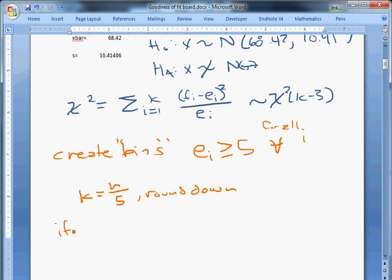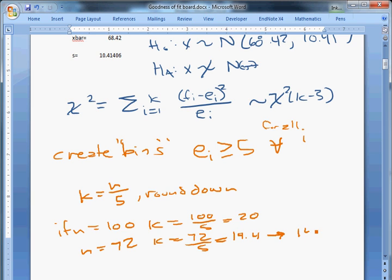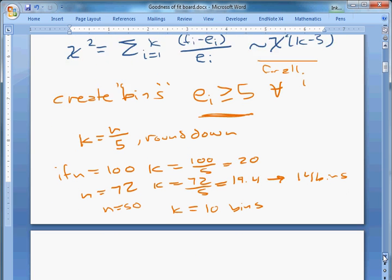So with a sample size, if N equaled 100, then K would equal 100 divided by 5 equals 20. If N equaled 72, then K would equal 72 divided by 5 equals 14.4, so we'd have 14 bins. As it stands, we have N equals 50, so we're going to have 10 bins. That's how it's going to work. The reason is that if we define the right number of bins, then we can guarantee that we'll have at least 5 in each one. The reason we do this is that if we don't, then the chi-square distribution thing breaks down under the null. So we need ei to be 5 in every case.